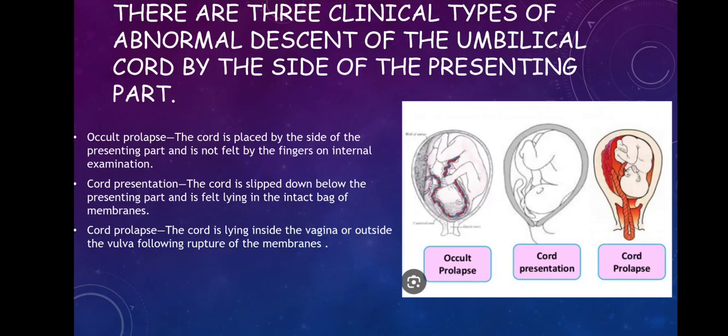When we talk about occult prolapse, the cord is placed by the side of the presenting part and is not felt by the fingers on internal examination. As you can see on the first diagram, the cord is present on the side, however it cannot be felt by the fingers on internal examination.